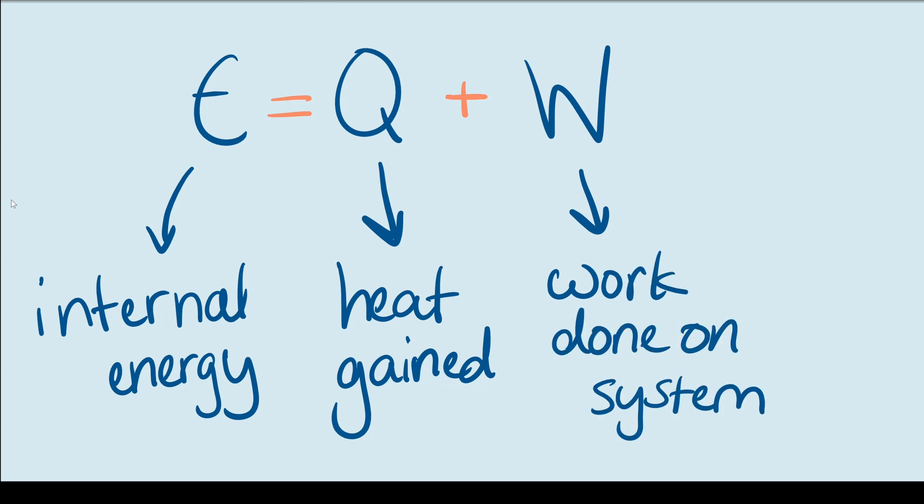Now, you might see the same equation differently in some textbooks, but don't worry. They may consider W to be the work done by the system, in which case this part right here would be a negative. As long as you remember the reasoning behind this and the logic behind the equation, memorizing it should not be too problematic. If you do end up using this exact formula, then note that a loss of heat from the system would be represented with a negative Q and work done by the system would be represented with a negative W.